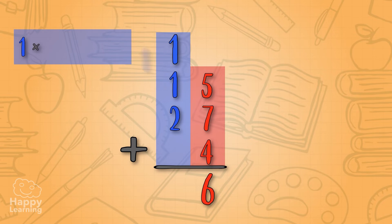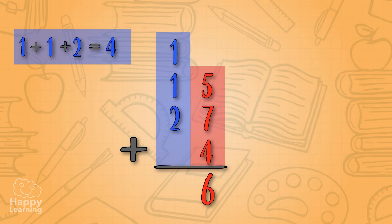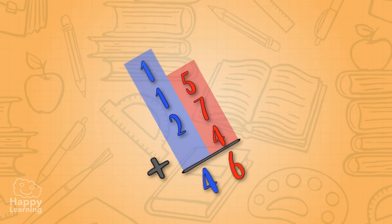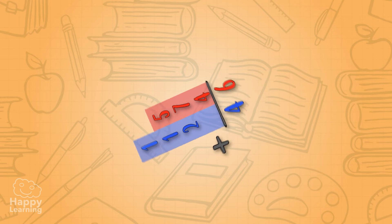One plus one plus two plus two is four, and we put number four in the result under tens. So the addition's final result is 46. Easy peasy! Now we've learned to add with remainders.